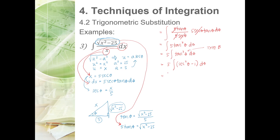Distributing: 5 times the integral of secant squared theta d theta minus 5 times the integral of d theta. The integral of secant squared theta is tangent theta and the integral of d theta is theta, giving 5 tangent theta minus 5 theta plus C.